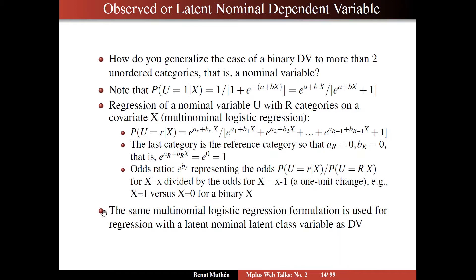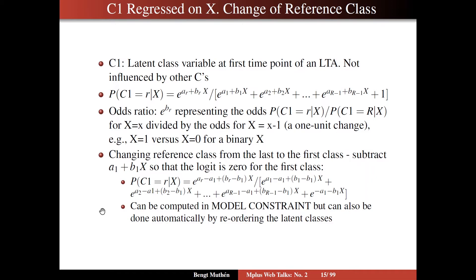Now this same multinomial logistic regression formulation is used for regression with a latent nominal latent class variable as a dependent variable. So if we look at that on slide 15, as an example we have C1 regressed on X, that is the latent class variable at time point one in the latent transition analysis. Here then, instead of a U, we have this nominal latent nominal variable. The latent class variable is nominal. We write it out, a multinomial logistic regression, in the same way as on the previous slide. And in the same fashion, the odds ratio is e to the power of b for category r, representing the odds we just talked about.